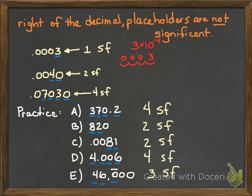Wait a second — that's actually a mistake. What we'll find out is that letter E actually has five significant figures. There's a mistake on this slide because those are trailing zeros to the right of the decimal point. So letter E has five sig figs.